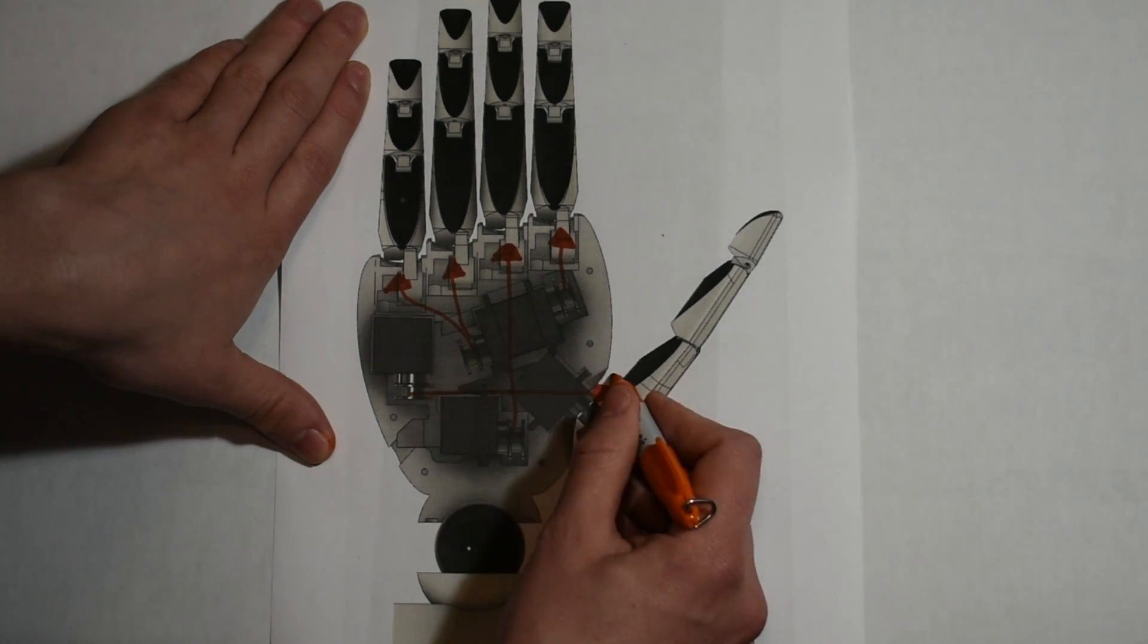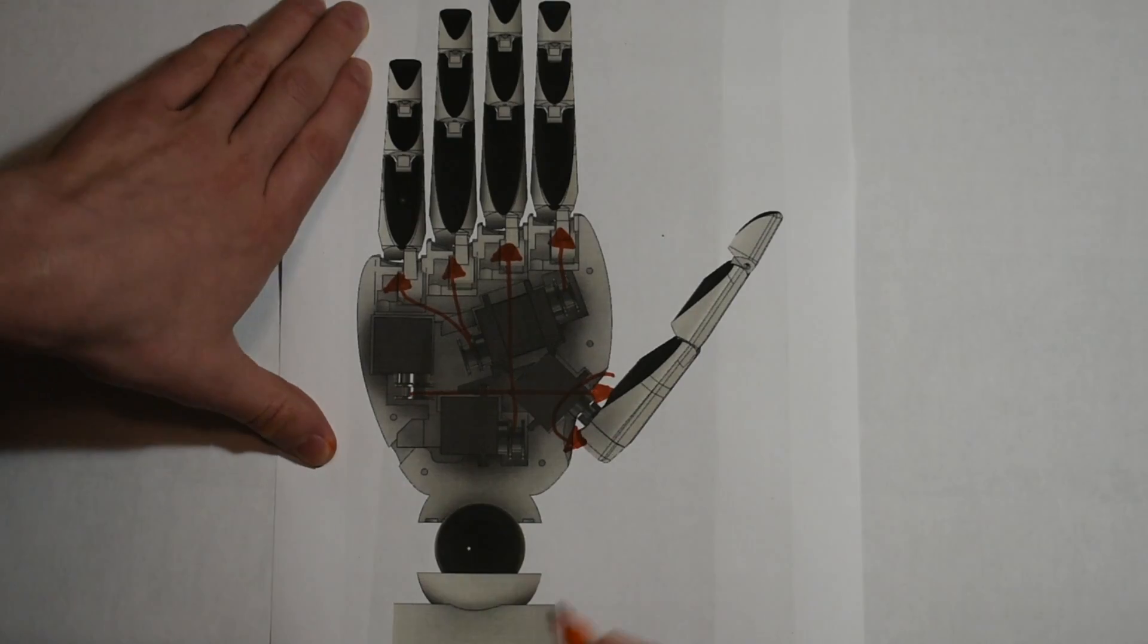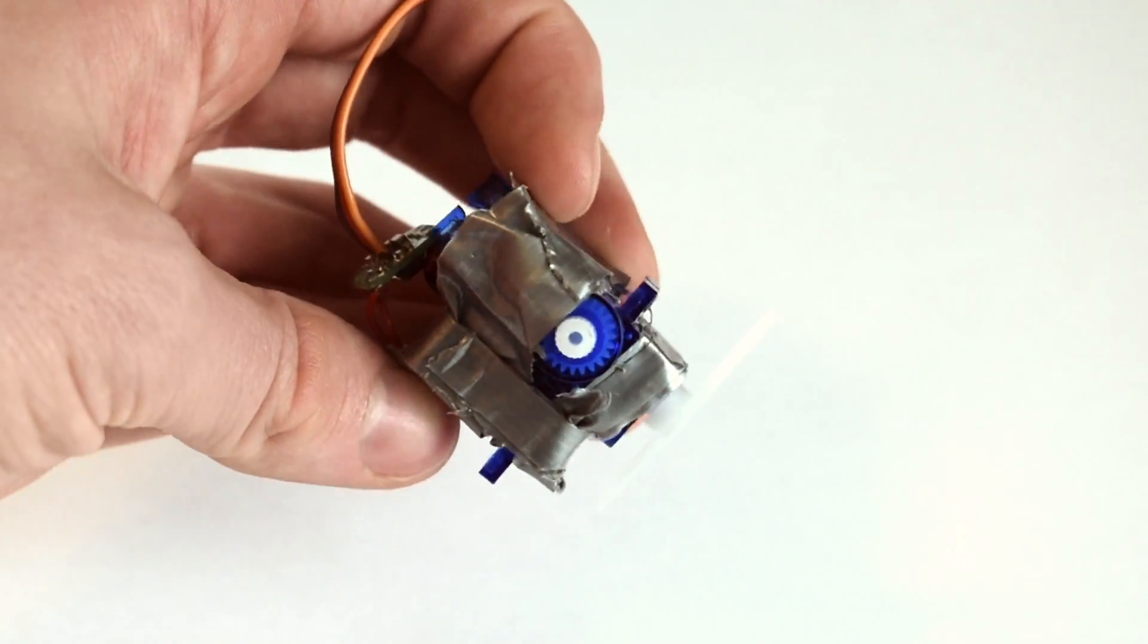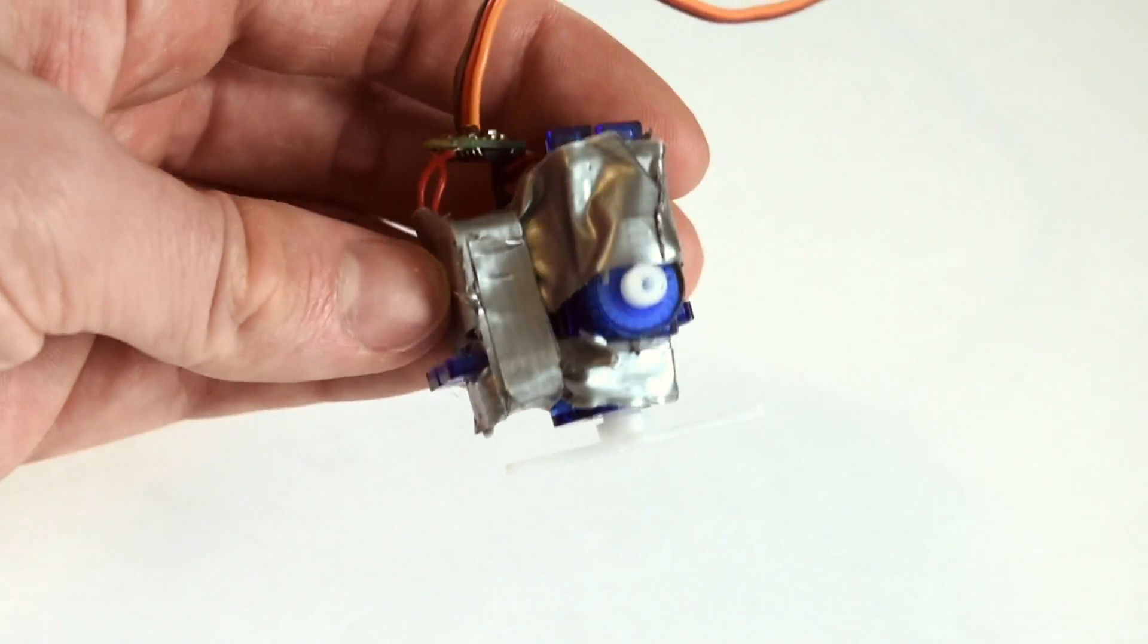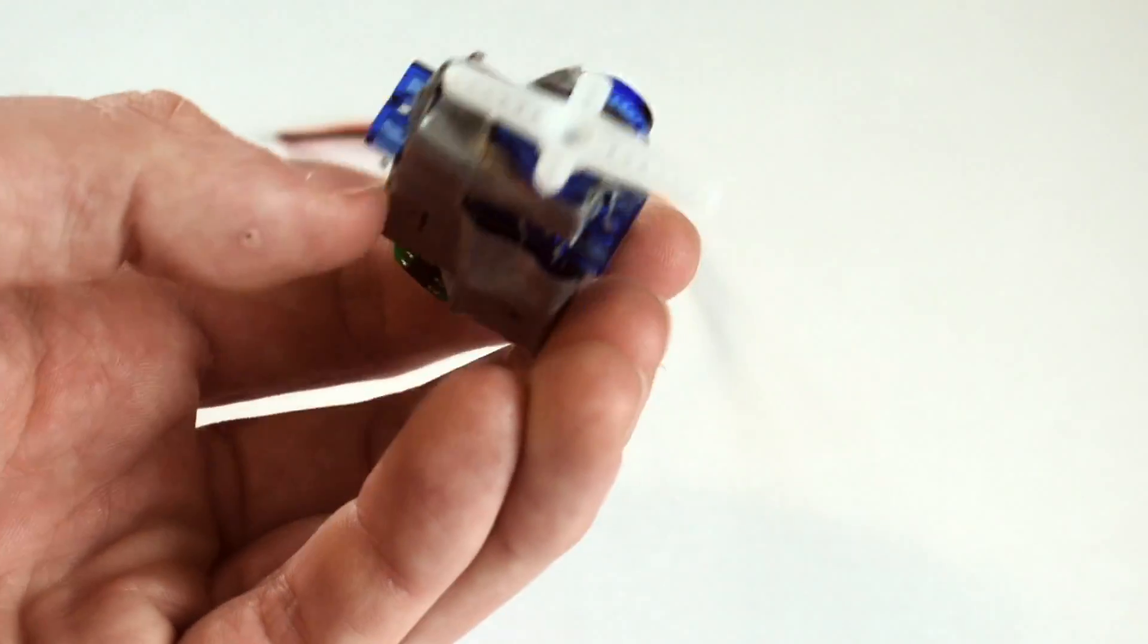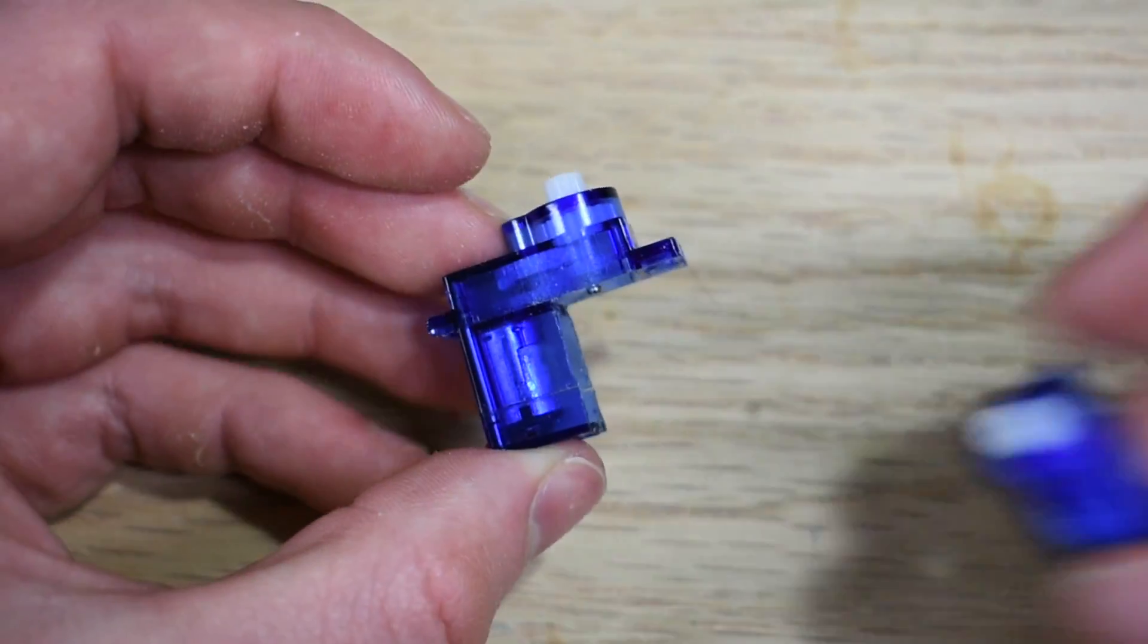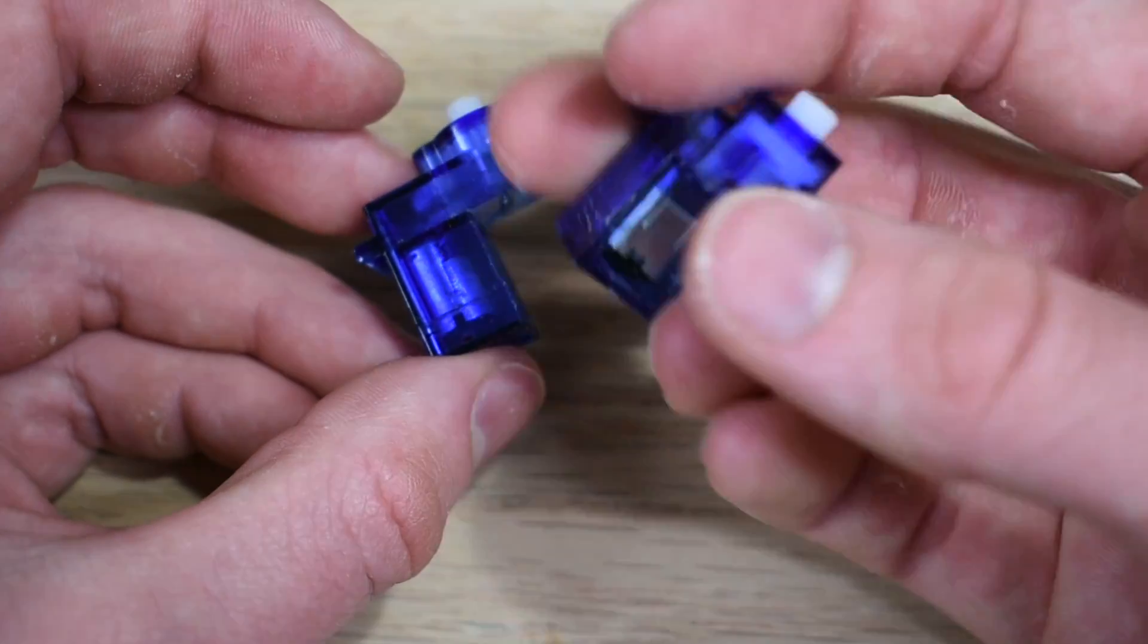The thumb is controlled by two servos, one to contract it and one for rotation. Another design I considered using for the thumb joint was this one. The steps to make it are almost the exact same, just rotate the cases when gluing.